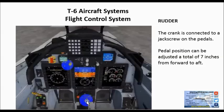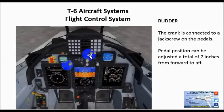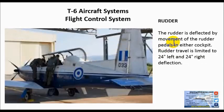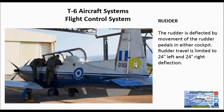The adjustment pedal is not depicted in the sim, but in the flight manual you just need to understand that they are there. The instructor pilot will demonstrate to the student naval aviator how to operate these controls in the event that they need to be adjusted. The rudder is deflected by movement of the rudder pedals in either cockpit. Rudder travel is limited to 24 degrees left and right.